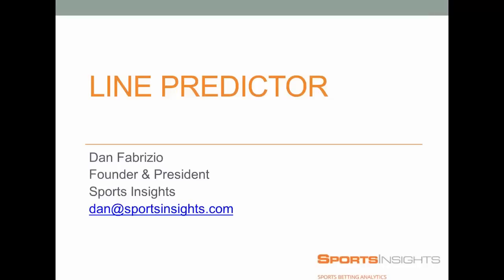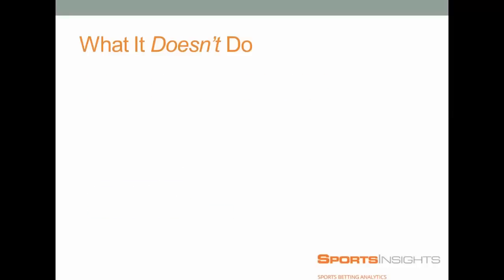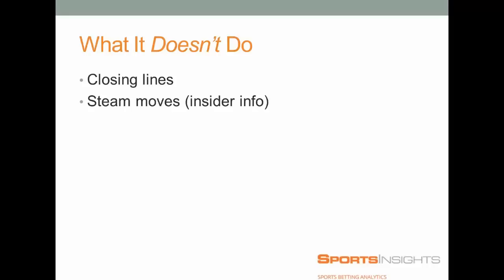So the Line Predictor — I thought it would be best to start off with what it actually doesn't do, because there's been a lot of speculation. It does not predict closing lines. Obviously we know opening lines, and the predictor will tell you which way they're heading, but it won't tell you what they're going to close at. That's something totally different, and that's not what this does.